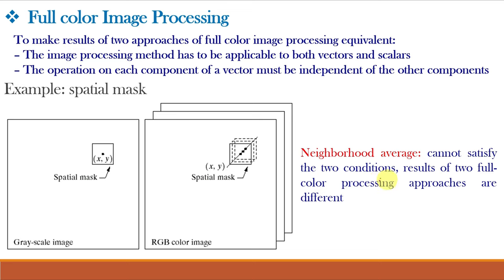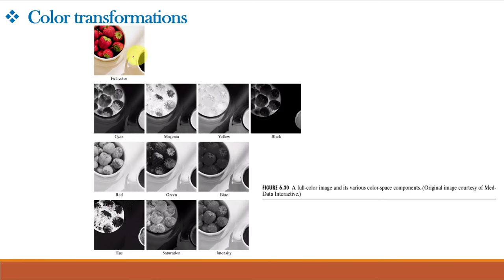Hence, the result of individual color component processing are not always equivalent to direct processing in color vector space. In which case, we must formulate new approaches. This figure shows a full color image and its various color space components. This first figure is a full color image. This second row shows the four components of CMYK, that is cyan, magenta, yellow and black.